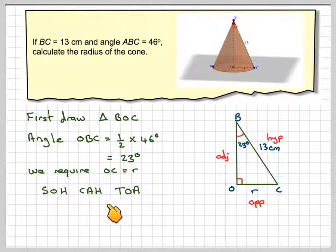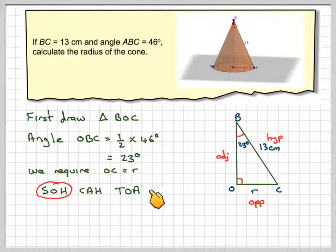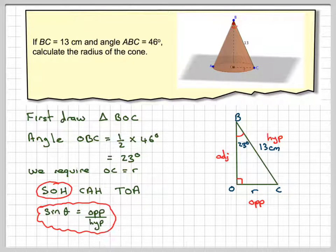And we use SOHCAHTOA to help us do it. So because we've got angle opposite hypotenuse, we're going to use the sine. Write down the formula. Sine theta is opposite over hypotenuse.